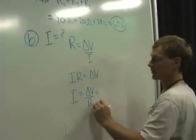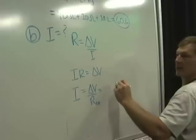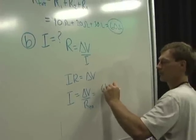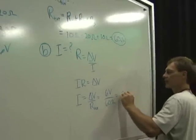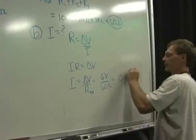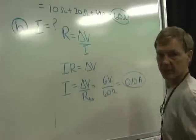And I get the current is voltage over the resistance. Now this is the total resistance. So I've got 6 volts divided by 60 ohms of total resistance. I've got 0.10 amps. That's my current.